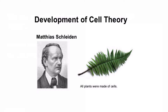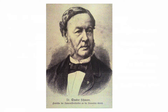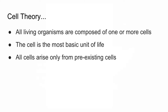One of the first things we want to talk about is the development of the cell theory. As microscopes got better and better, people like Matthias Schleiden, who studied plants, started coming up with a part of the cell theory that says all plants are made of cells. Theodore Schwan worked with animals and started saying the same thing. Cell theory is really profound. It says all living organisms are composed of one or more cells, the cell is the most basic unit of life, and all cells arise from pre-existing cells.